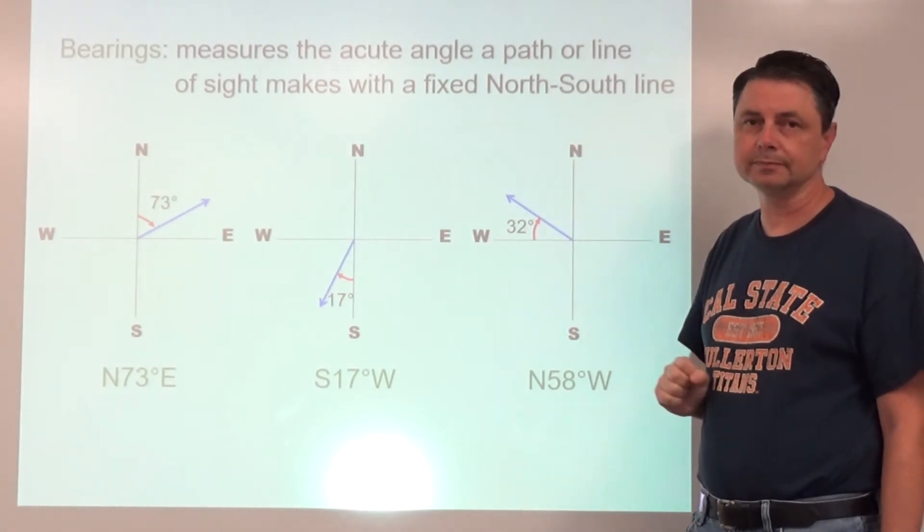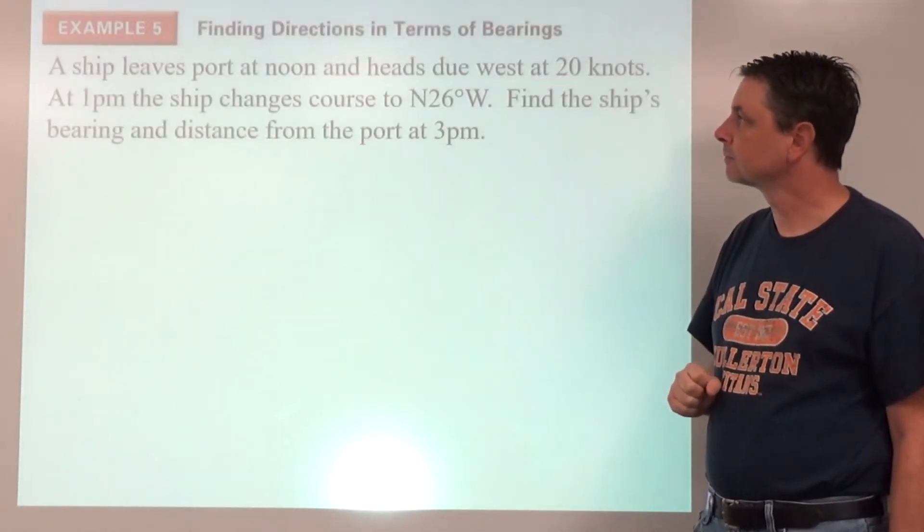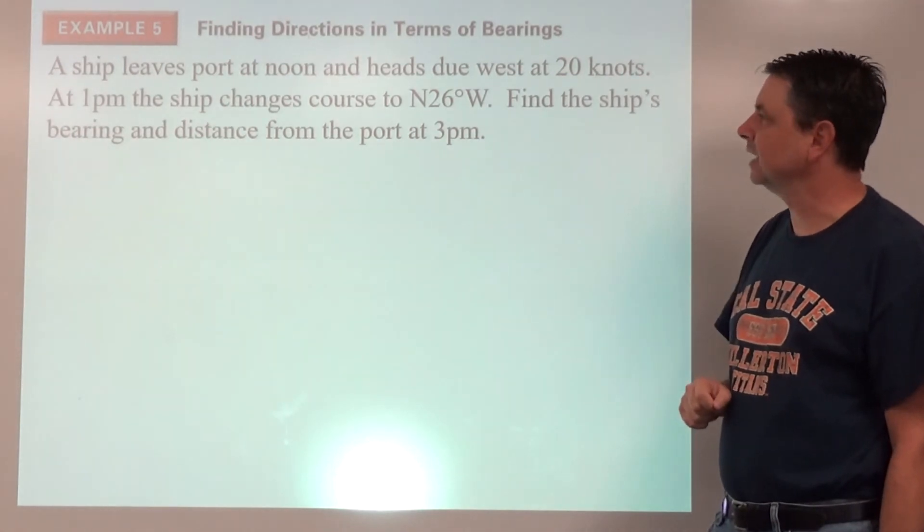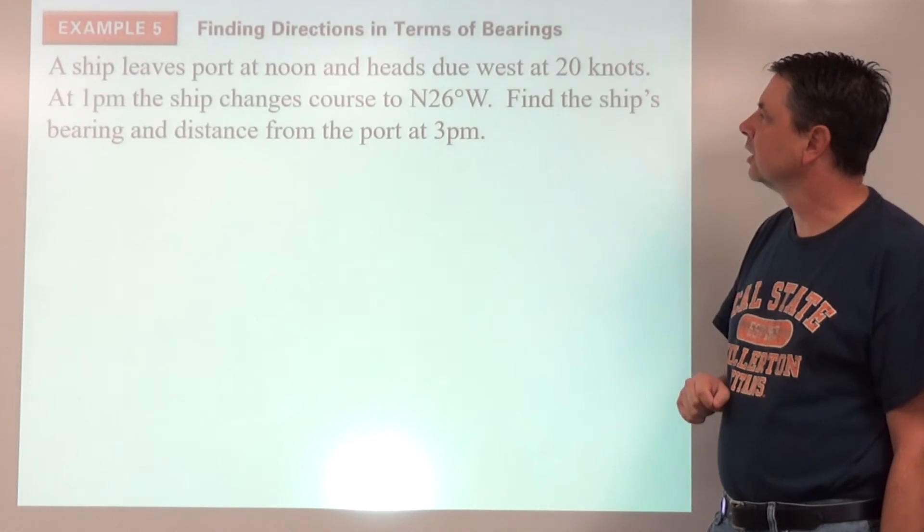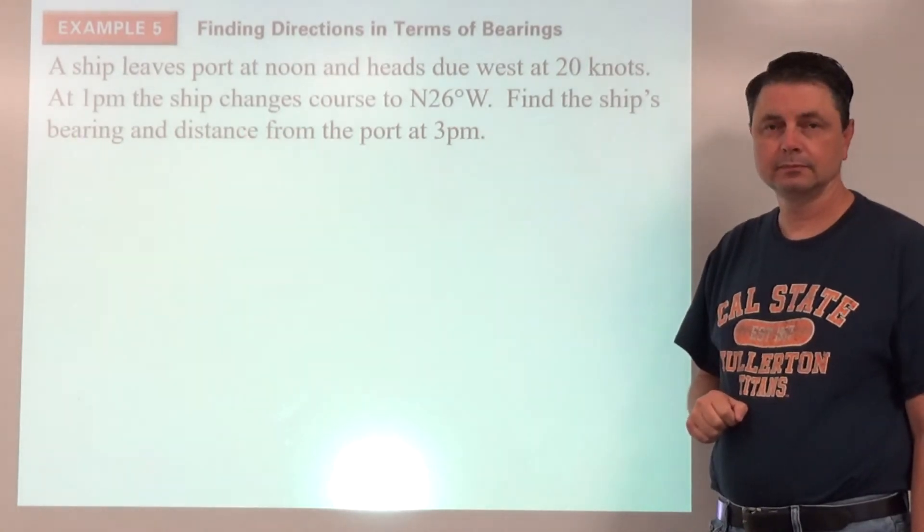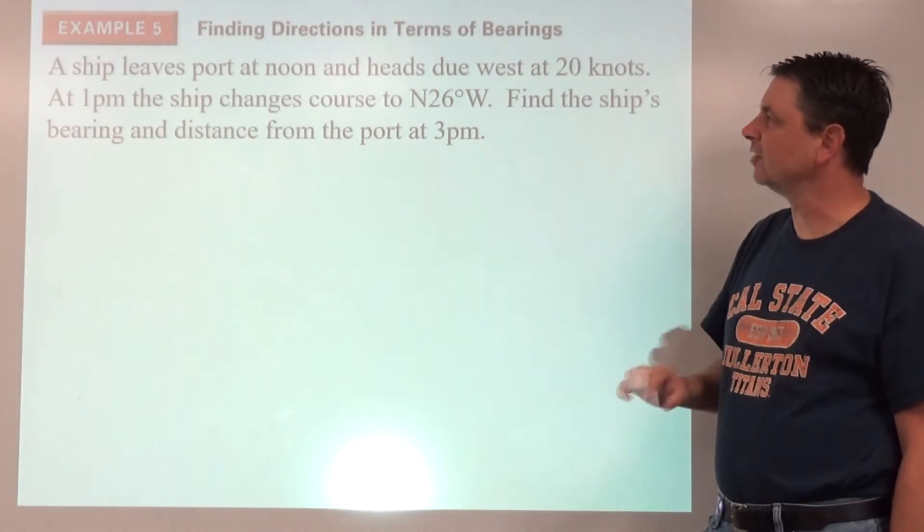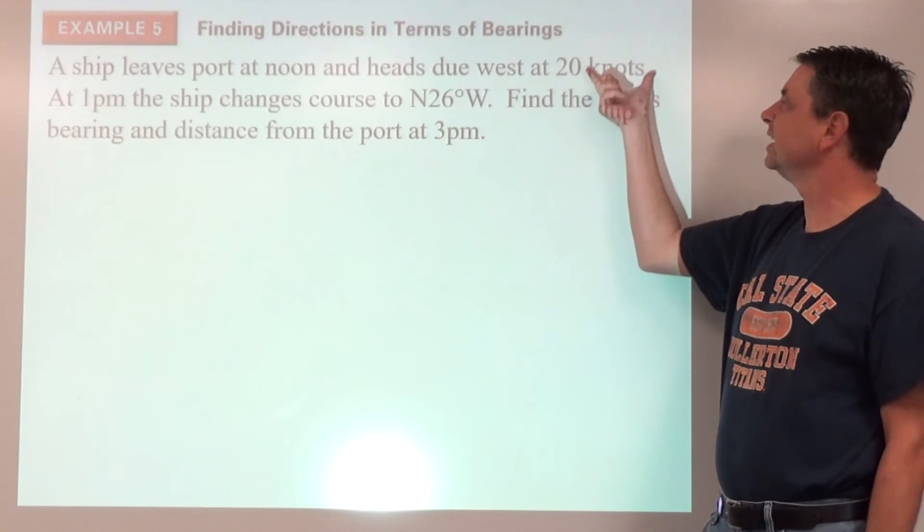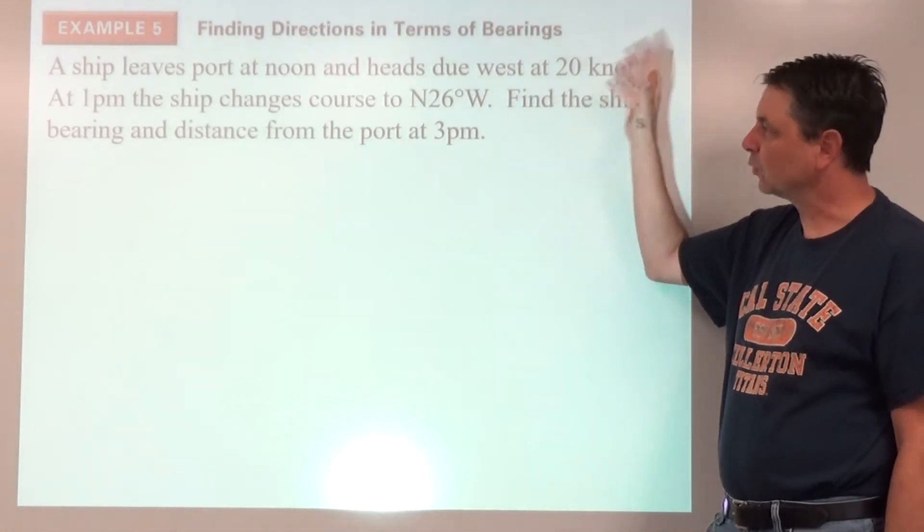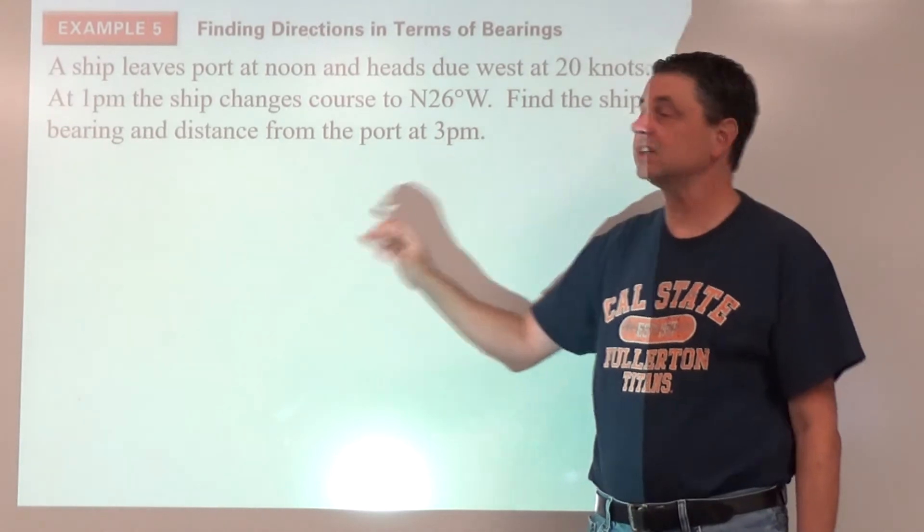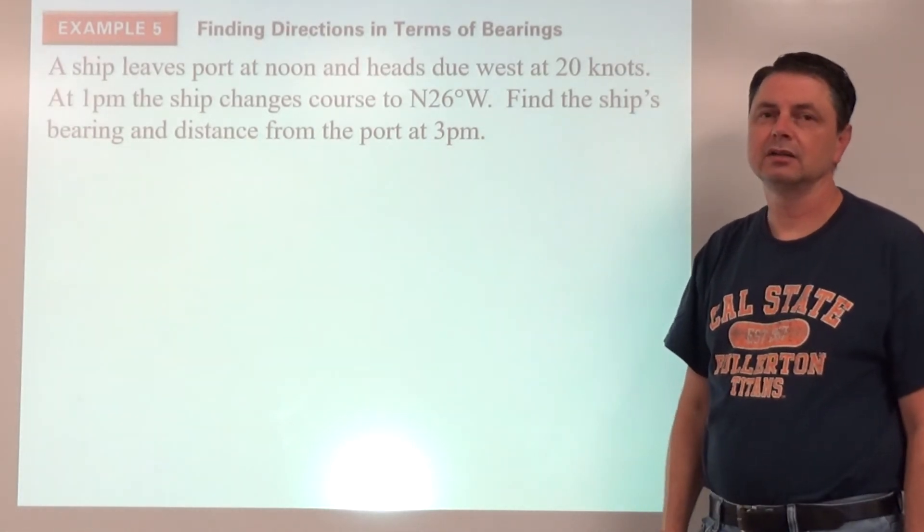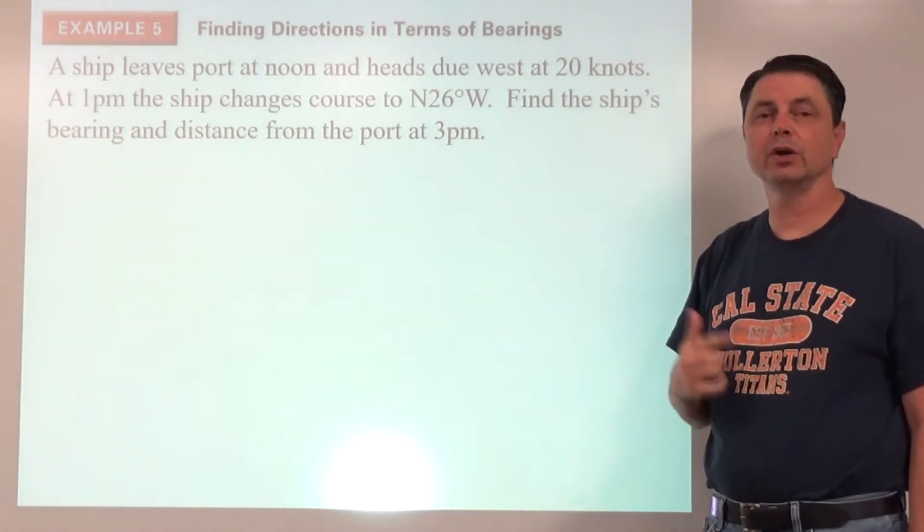Example number five: a ship leaves port at noon and heads due west at 20 knots. At 1 p.m., the ship changes course to north 26 degrees west. Find the ship's bearing and distance from the port at 3 p.m. Before we get to the sketch, a little bit of background knowledge on some nautical concepts. Knots refers to nautical miles per hour, so this is a speed. When we do our sketch, it's probably going to be in terms of distances, so you might need to be able to relate your speed to a distance. Go ahead and sketch with a lot of detail.